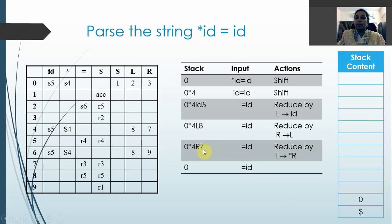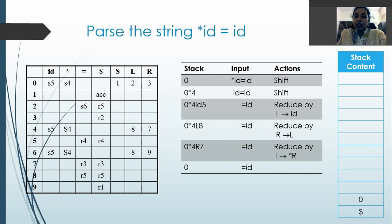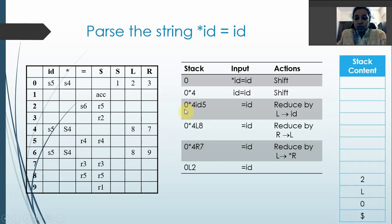Now it is state 7 on '=', which means reduce by the 3rd production: L → *R. There are 2 grammar symbols on the right-hand side, so we pop 4 symbols — that is 7, R, 4, and star — popping until star is removed, leaving state 0 on top. Star and R are replaced by L. Now state 0 on L gives goto state 2. So we push L and state 2 onto the stack.